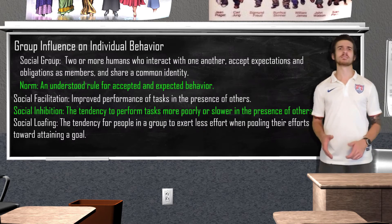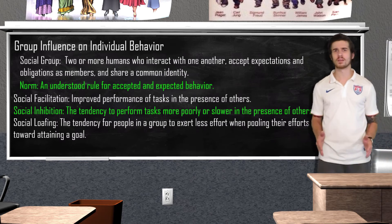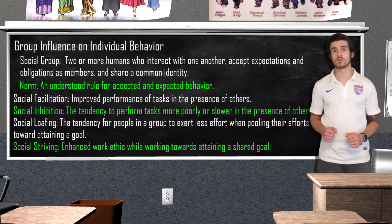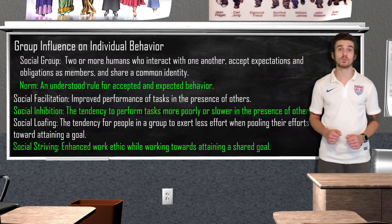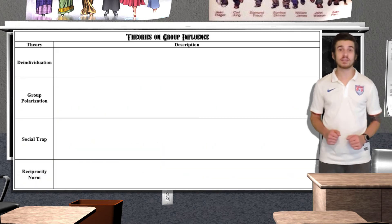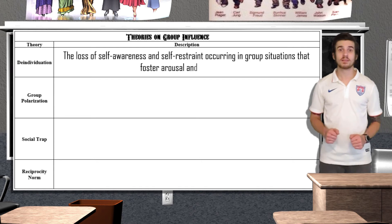Social loafing pretty much describes that kid who does absolutely nothing in group projects — thinking the group will get it done whether they help or not. Social striving, on the other hand, refers to enhanced work ethic while working towards a shared goal. Social loafing is more prominent in individualistic cultures, while social striving is more prominent in collectivistic cultures. Deindividuation refers to a loss of self-awareness and self-restraint occurring in group situations that foster arousal and anonymity.